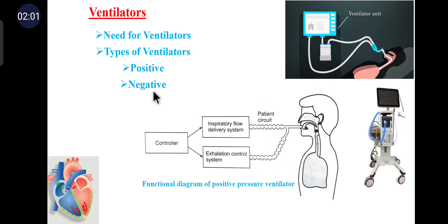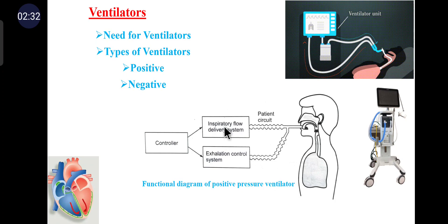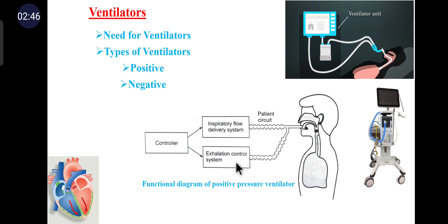Negative pressure ventilators are not preferred due to some technical reasons. In the positive pressure ventilator, inspiratory flow is achieved by applying a positive pressure greater than the atmospheric pressure to the airways. During inspiration, the inspiratory flow delivery system creates positive pressure in the patient circuit and the exhalation control system closes the outlet to the atmosphere. During the expiratory phase, the inspiratory flow delivery system stops and the exhalation system opens a valve allowing exhaled air to the atmosphere.